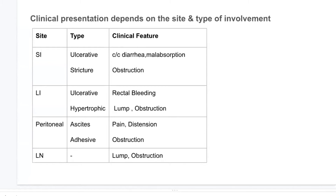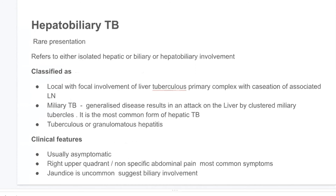Lymph node enlargement usually presents with abdominal lump or obstruction. Hepatobiliary TB is a rare presentation, referring to either localized isolated hepatic involvement, isolated biliary involvement, or hepatobiliary involvement. Forms include focal hepatic tuberculosis, primary complex with caseation of associated lymph nodes, miliary tuberculosis (the commonest form of hepatic TB), and tuberculosis granulomatous hepatitis. Clinical features are usually asymptomatic or present with right upper quadrant non-specific abdominal pain. Jaundice, when present, usually indicates involvement of the biliary tract.